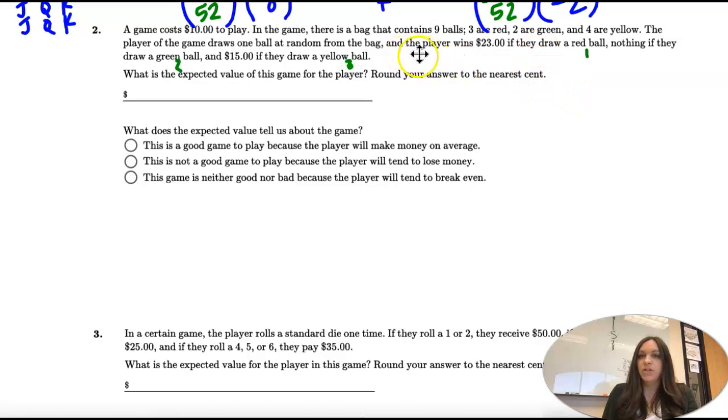Our equation will have probability times outcome, plus probability times outcome, plus probability times outcome. We're going to have three terms.